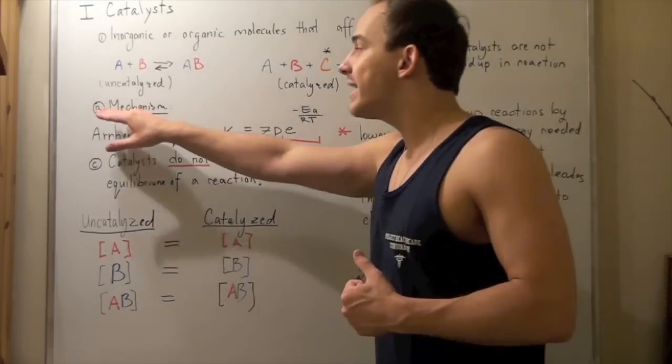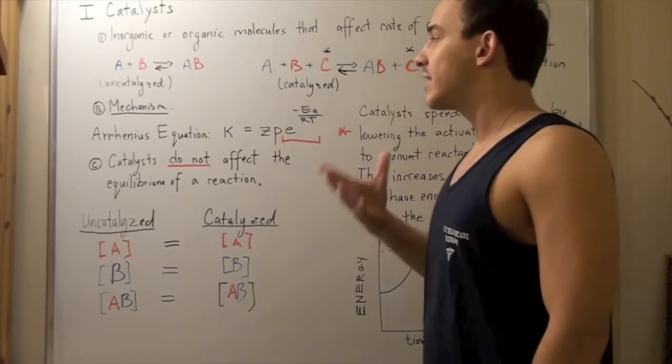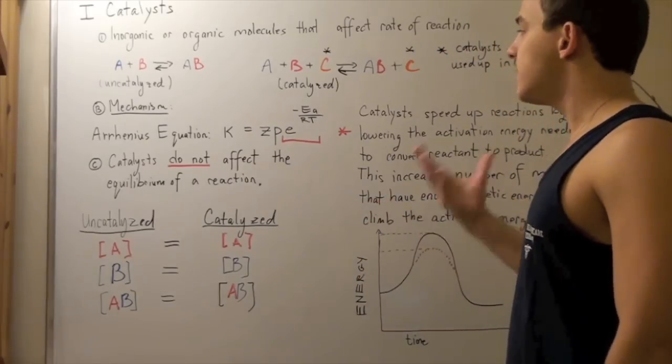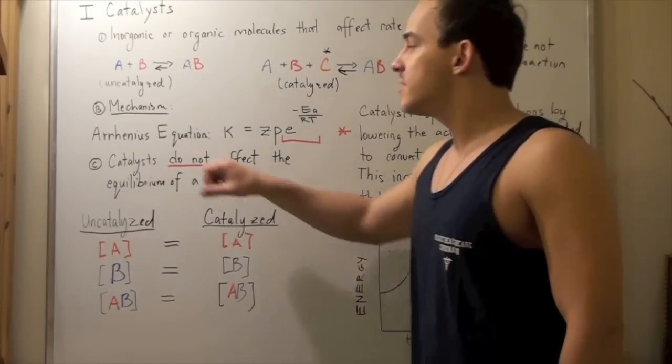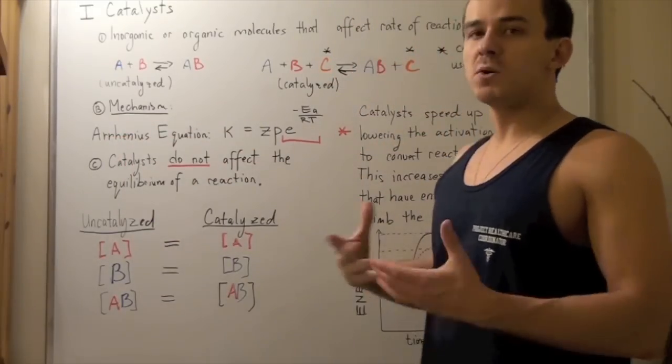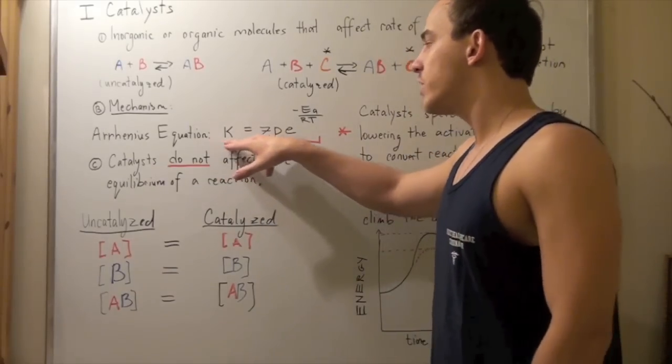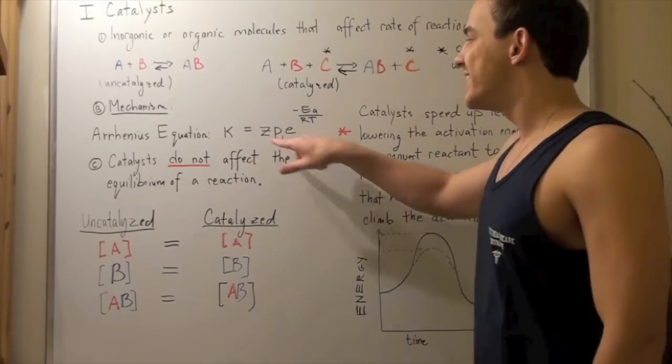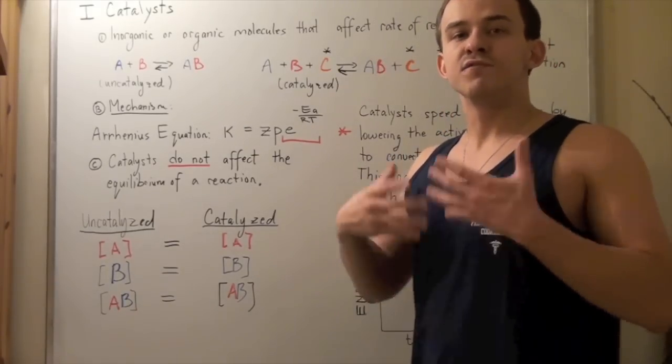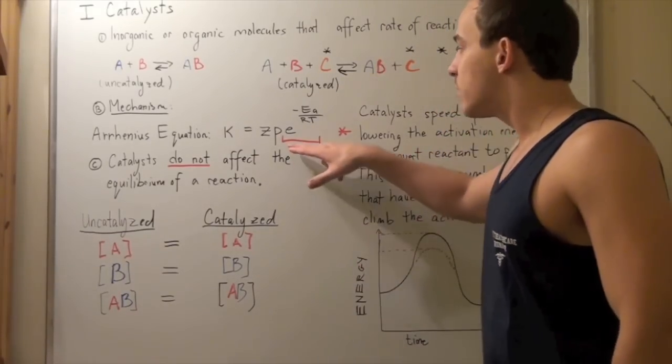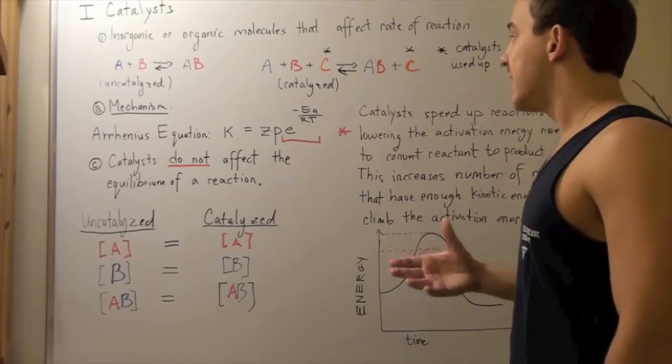Let's look at the mechanism by which these catalysts affect our reaction rates. We have to go back to our Arrhenius equation. This equation we spoke about when we spoke about temperature and reaction rates. So K, our reaction constant, is equal to Z times P. Z and P are the steric factor and the frequency of collisions. This guy, E, is what our catalyst affects.